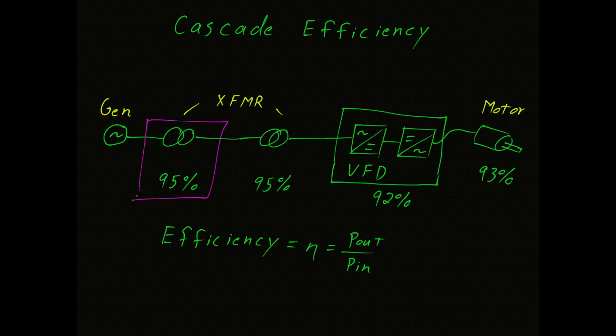What we'll do now is look at the very first stage in our cascade. We know the efficiency is 95%, which we write here as 0.95. And what we're going to do is assume a power input of one unit. And from there, we can calculate power out. And you can see that power out will be 0.95 units. And we'll write that up here next to the generator. So one unit in, 0.95 units out. Now I'm going to erase this, and we'll look at the second stage.